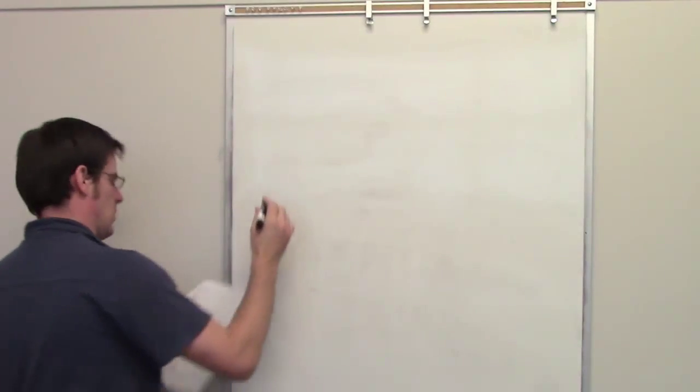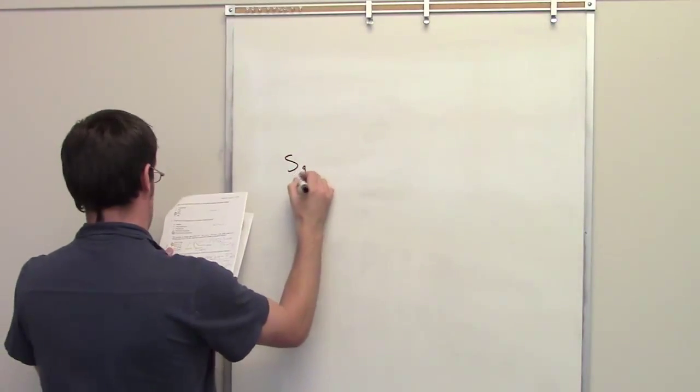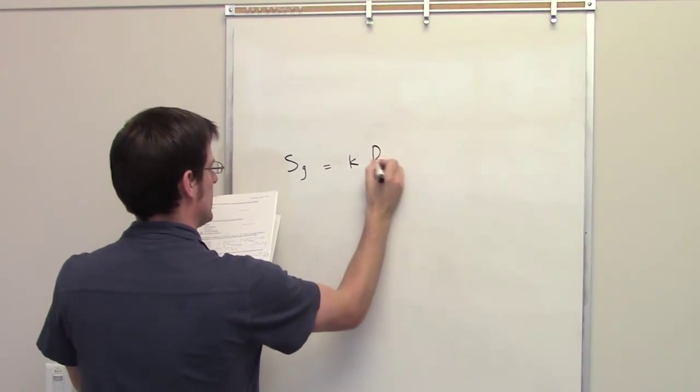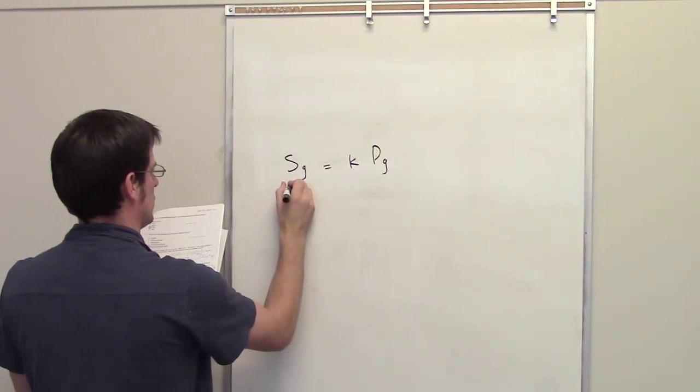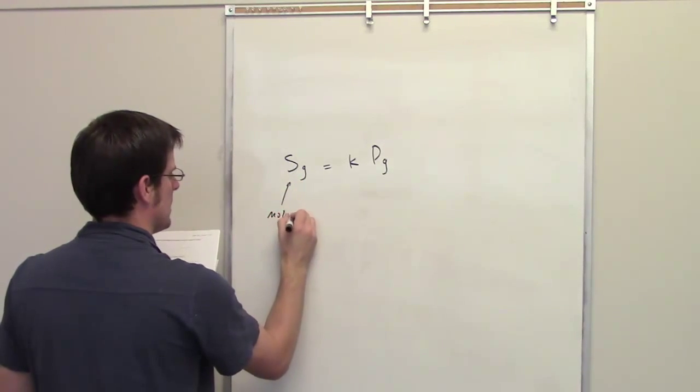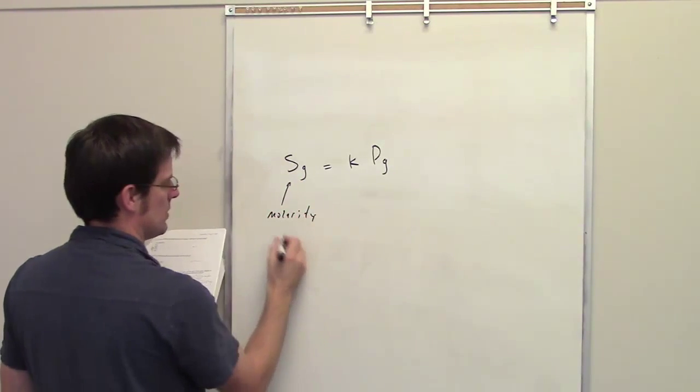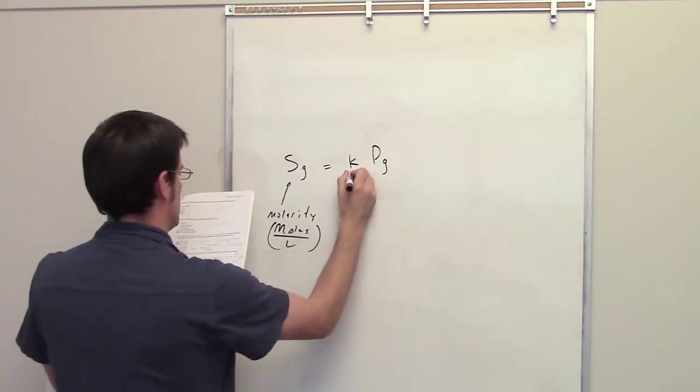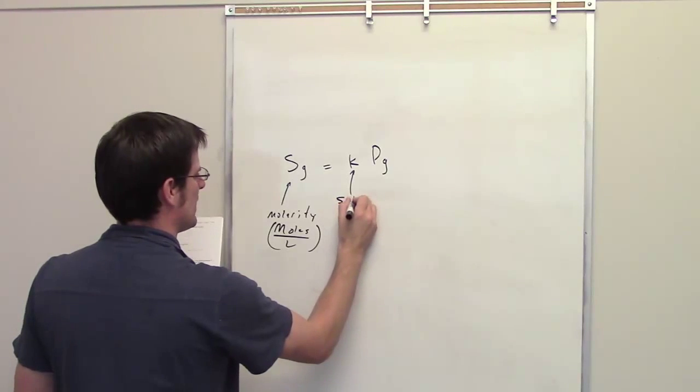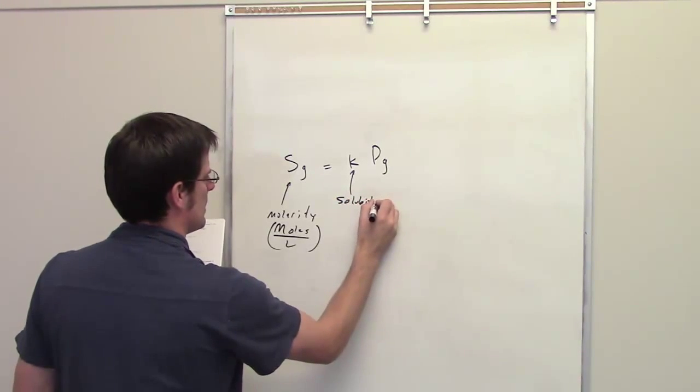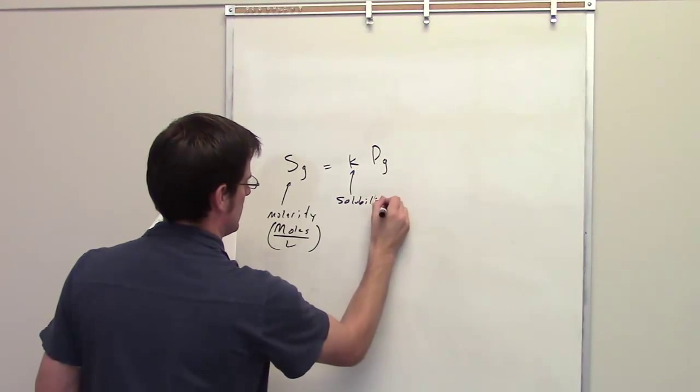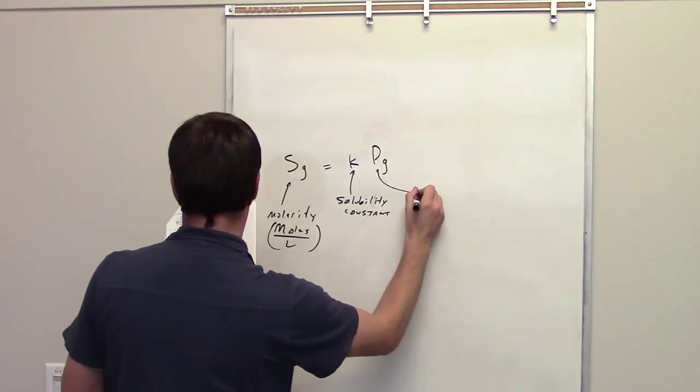This problem will involve using the equation I just gave you, which is molarity equals solubility times partial pressure. So this is molarity, which is of course units of moles per liter. This is solubility, and this is kind of confusing, this solubility constant. This is partial pressure.